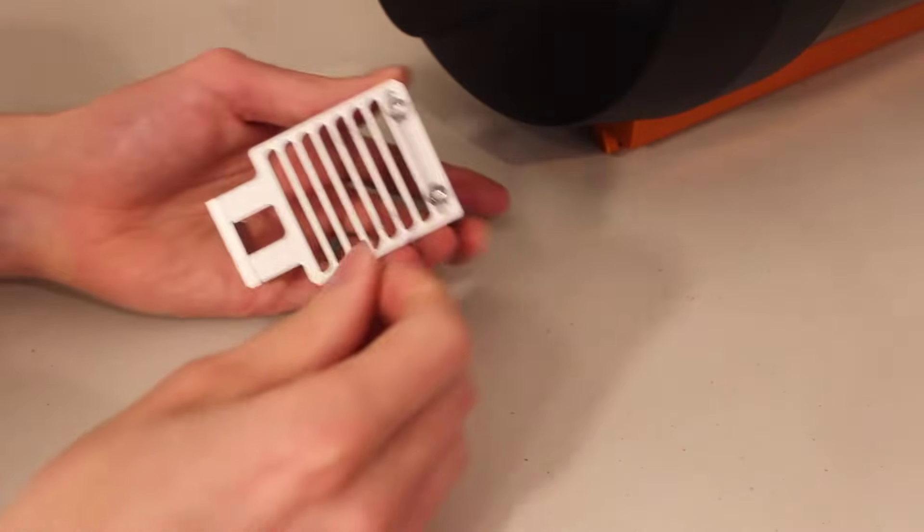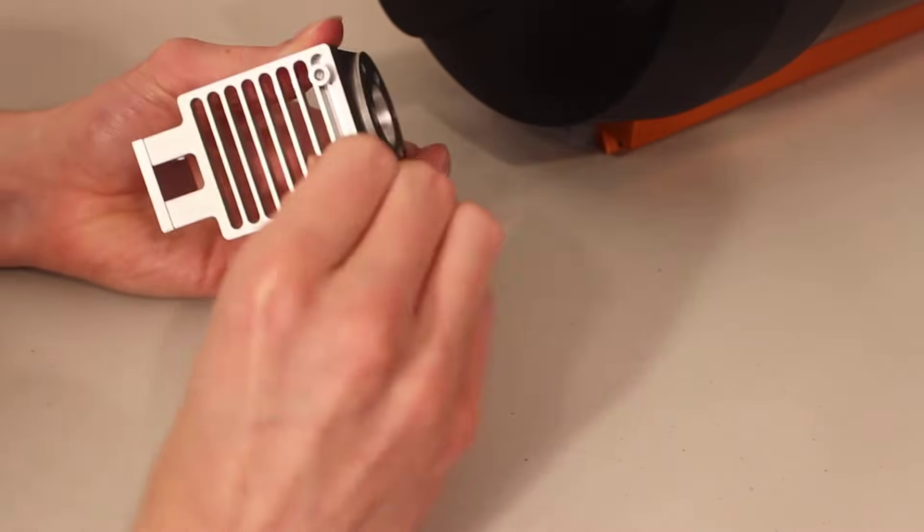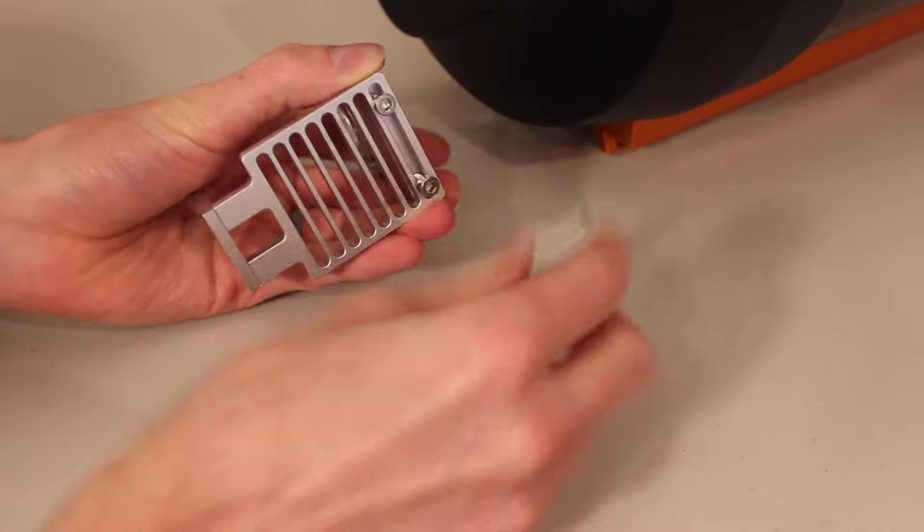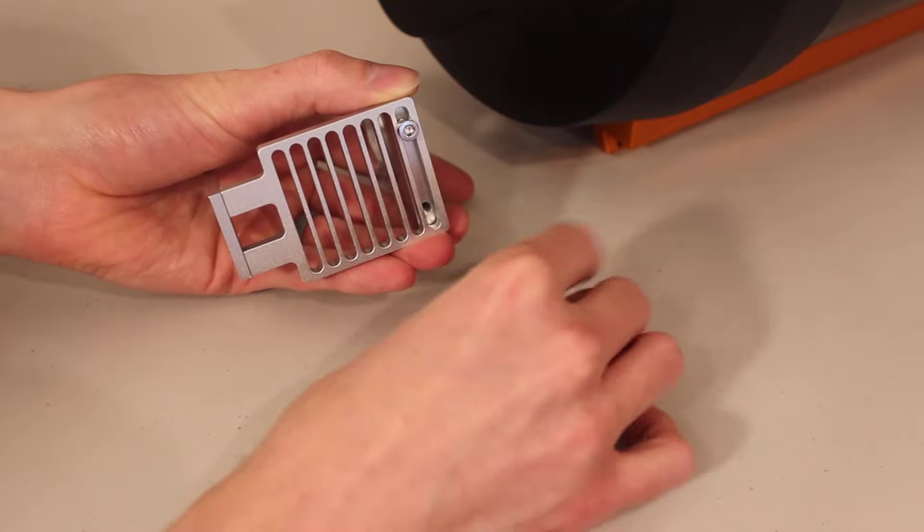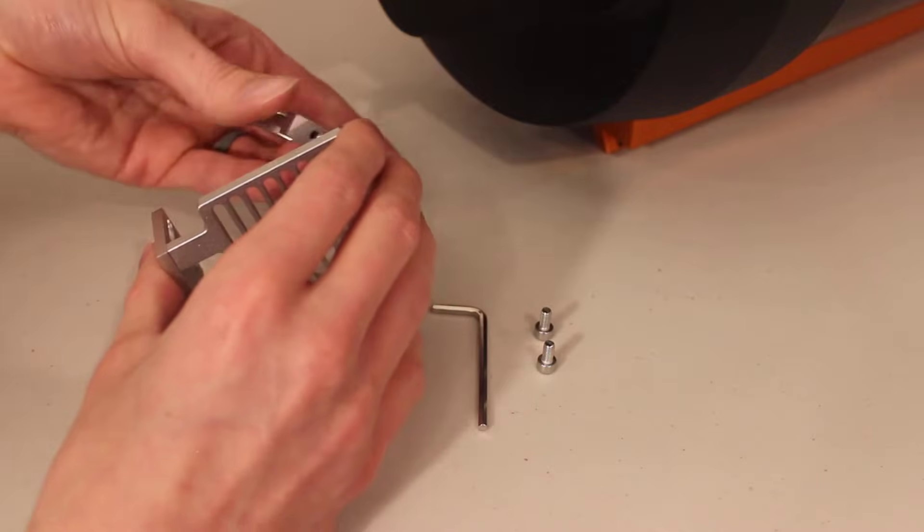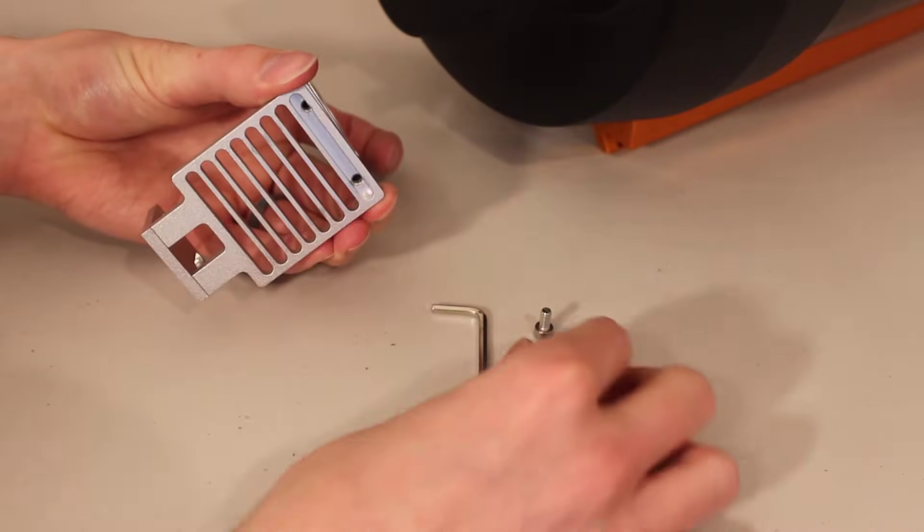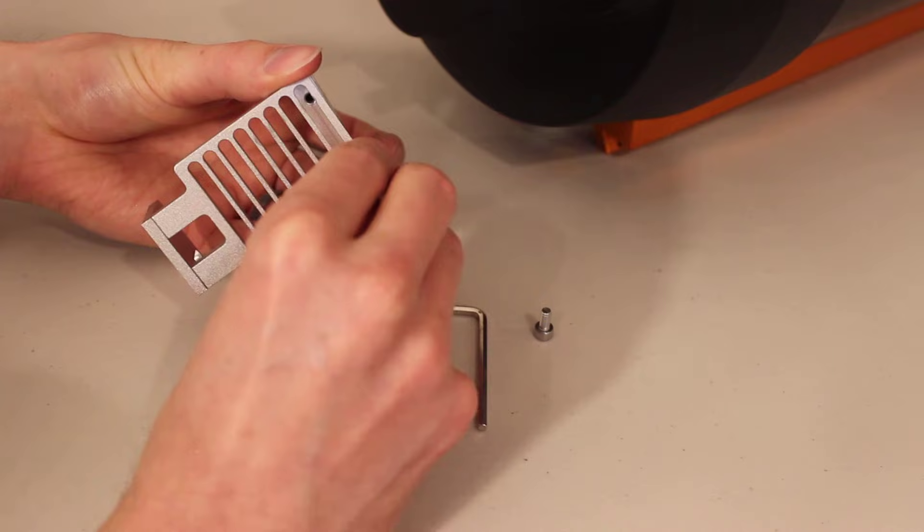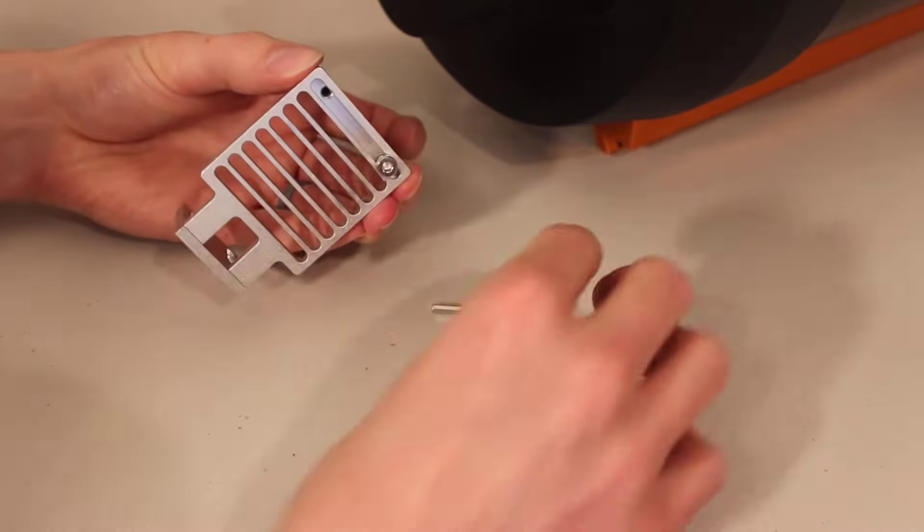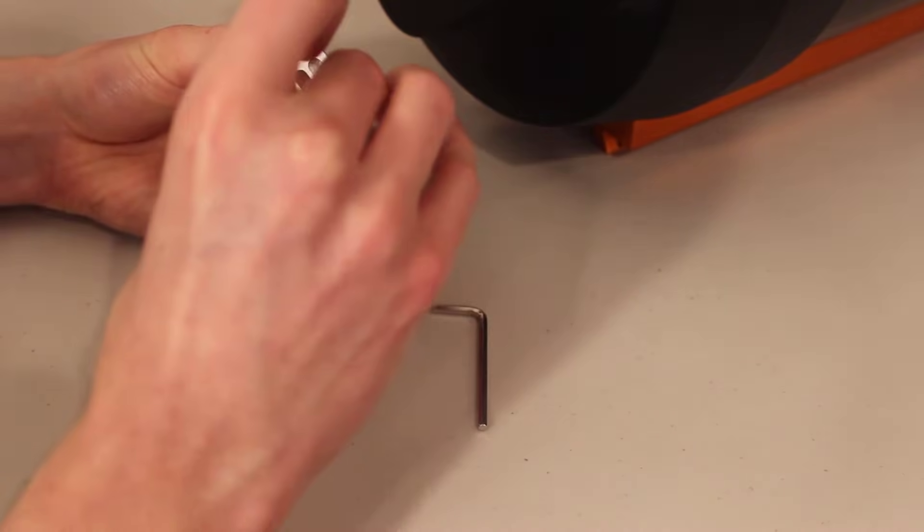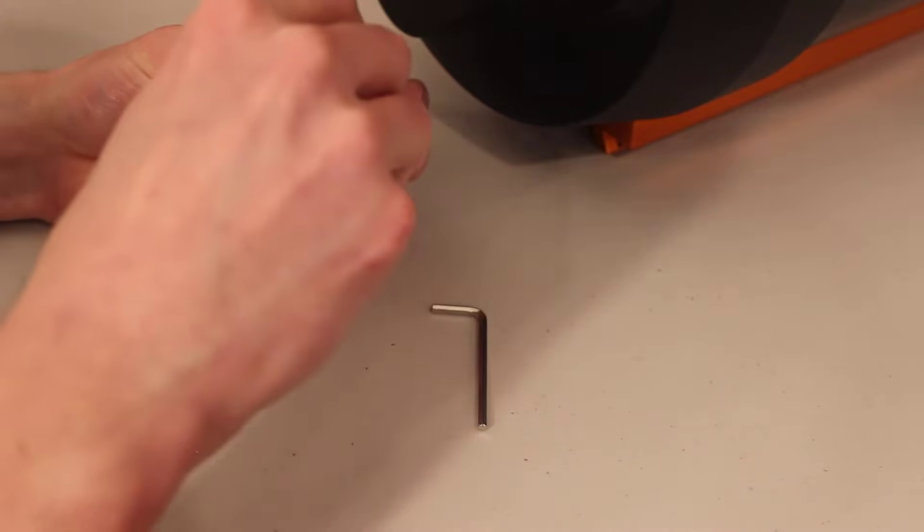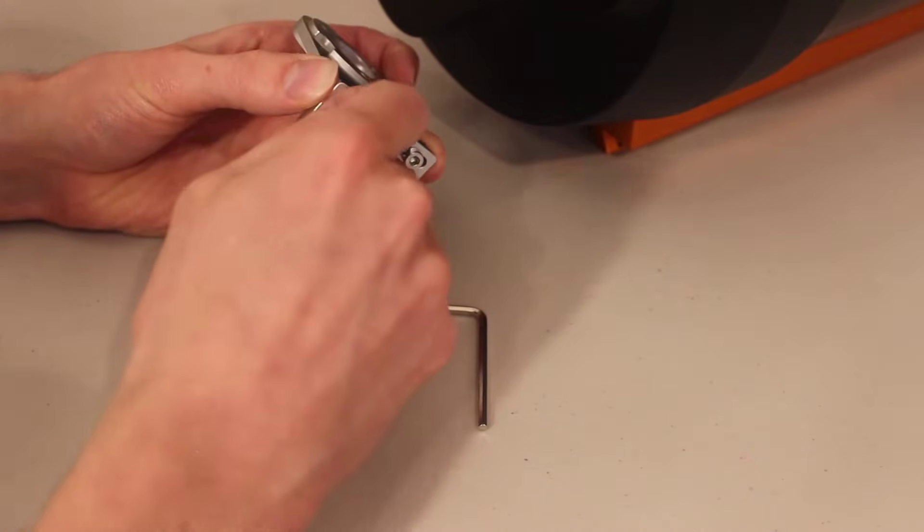If you're using the C8 or the C9 1⁄4-inch with this bracket, you're going to want to flip this piece. And if you're using it with the C11 and the C14, you'll want to leave it how it is. Since I am using an 8-inch Schmidt Cassegrain, I'm going to go ahead and flip this plate around, as I just mentioned, just so I can get that longer bolt length and get a much more secure connection to my telescope.